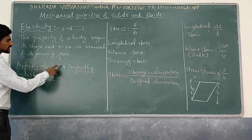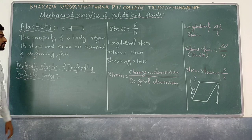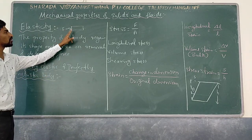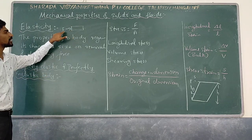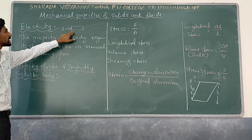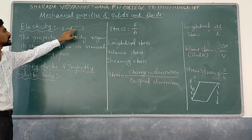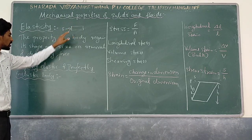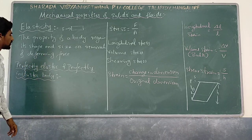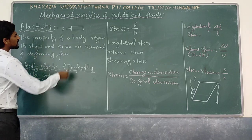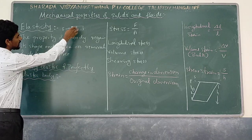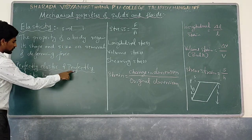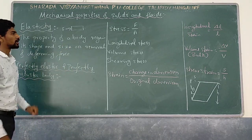Now, what is a perfectly elastic and perfectly inelastic body? Perfectly elastic means after removal of the deforming force, the body completely regains its original shape and size. That body is called a perfectly elastic body. If the body completely changes its shape and size permanently, it is called a perfectly inelastic body.